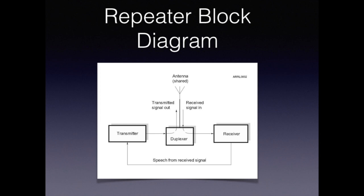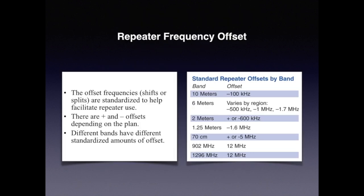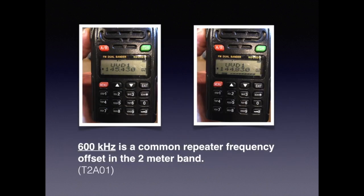To avoid interference, what is normally done is the frequencies are offset. Offsets are sometimes called splits or shifts. They can be plus or minus, and the amount that the frequency is offset is a function of which band we desire to operate on. The most important offsets for the Technician class licensee are 2 meters and 70 centimeters. The 2 meters offset is typically plus or minus 600 kilohertz, and for 70 centimeters, it's plus or minus 5 megahertz.